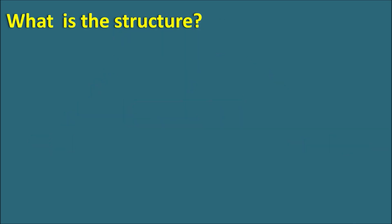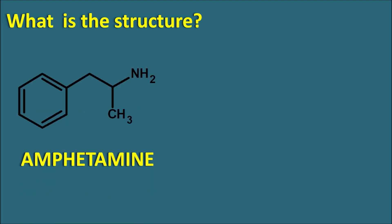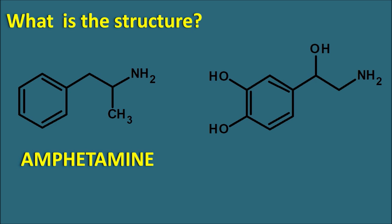First, let us look at the structure of amphetamine. You can observe that it is not a catecholamine — it does not have OH groups attached to the phenyl ring system. In contrast, norepinephrine has two OH groups on the phenyl ring and one OH group at the beta position to the amine. These three OH groups are absent in amphetamine, and this lack of OH groups results in indirect activity. Additionally, amphetamine has an extra CH3 group not present in norepinephrine. These structural differences result in the indirect action of amphetamine on sympathetic neurons.